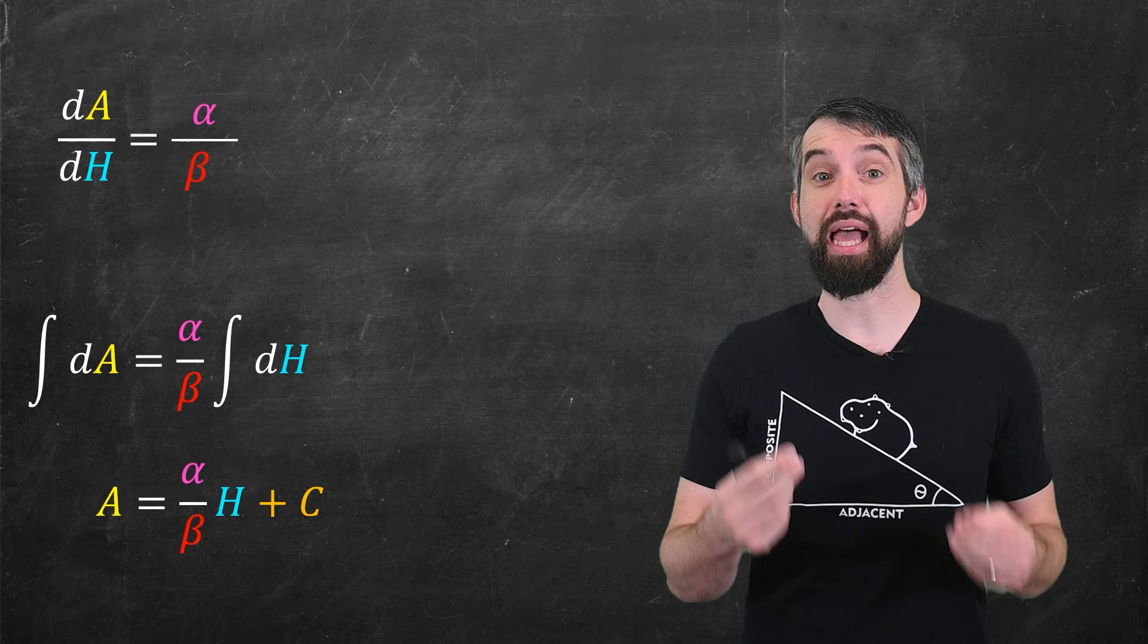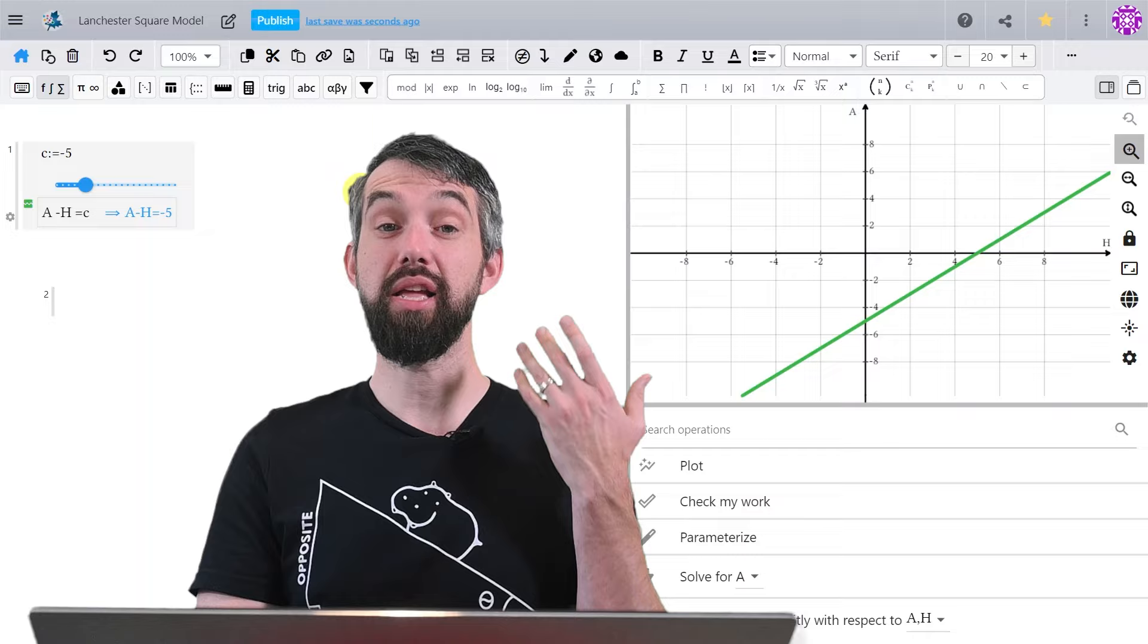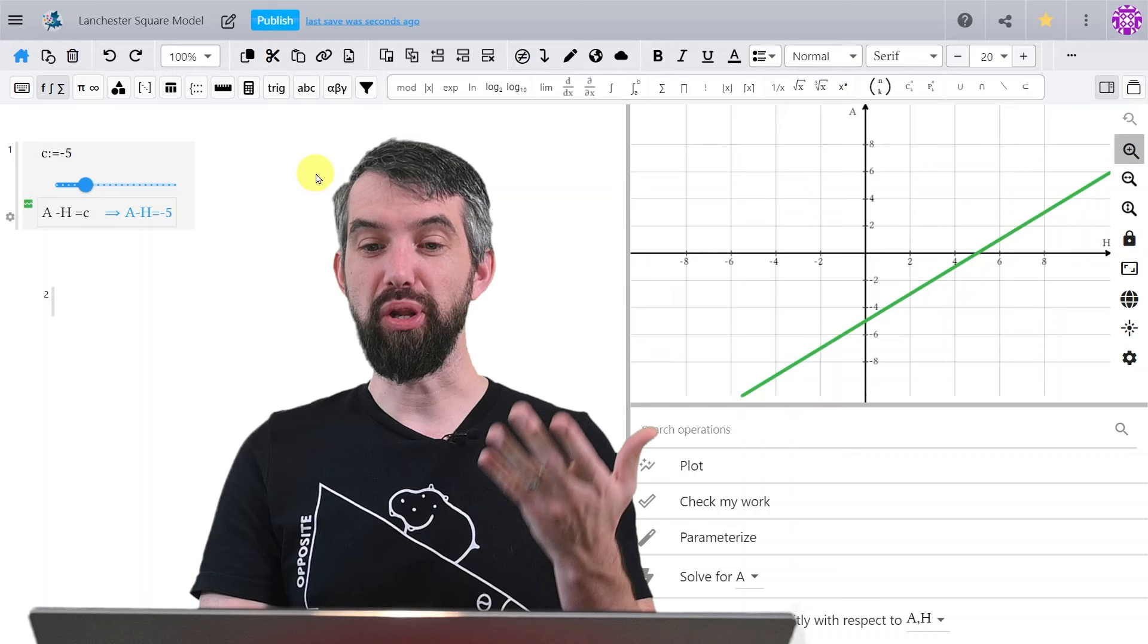And this is going to get me ultimately a linear model that A is these constants times H plus C. This is often called Lanchester's linear model because the result is, well, just linear. Coming back to MapleLearn, as we see plugging this in, it's just straight lines.